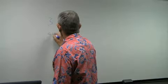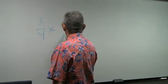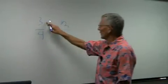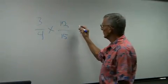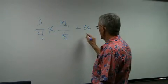we can multiply the numbers straight across. 3 times 12 equals 36, and 4 times 15 is 60.